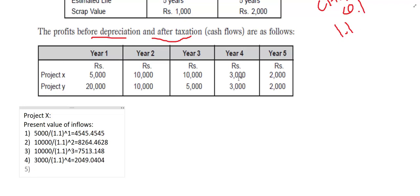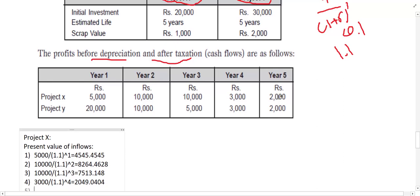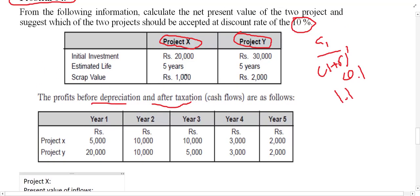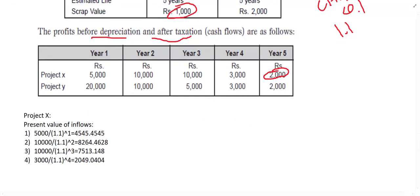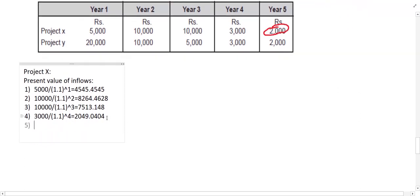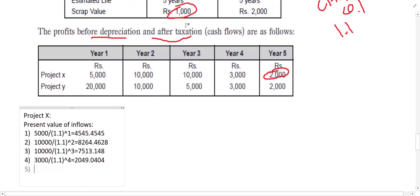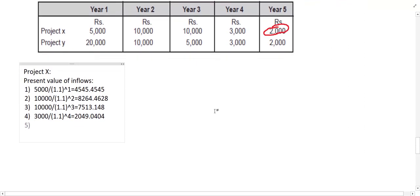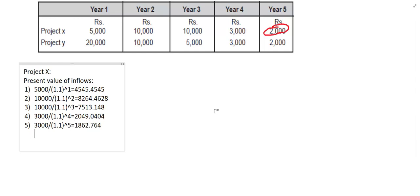For Year 4, the inflow is 3,000: divide by (1.1) to the power of 4, press equal to get the Year 4 value. For Year 5, remember that the scrap value must be added to the last year's inflow. For Project X, scrap is 1,000 and the inflow is 2,000, so the total is 3,000. Calculate: 3,000 divided by (1.1) to the power of 5, press equal to get the Year 5 present value.